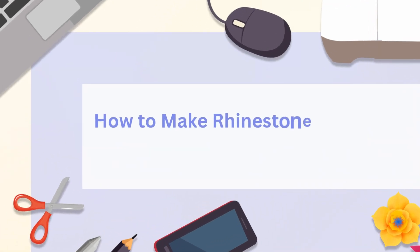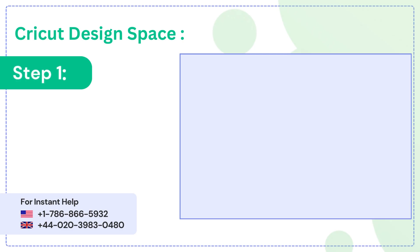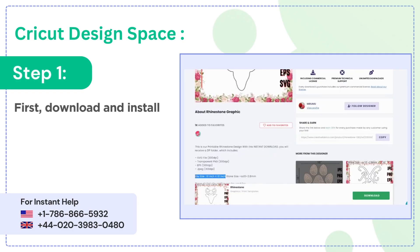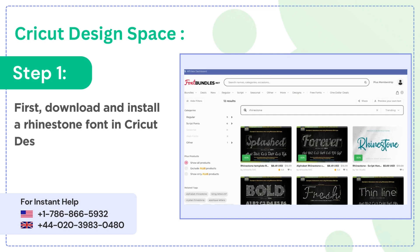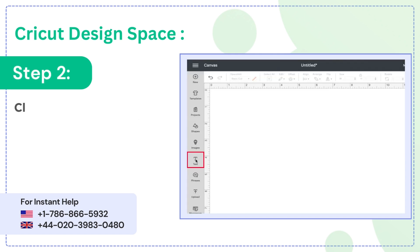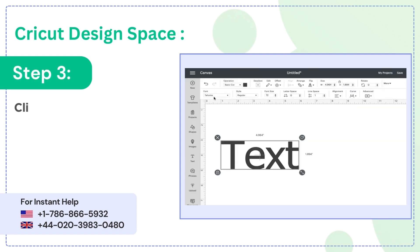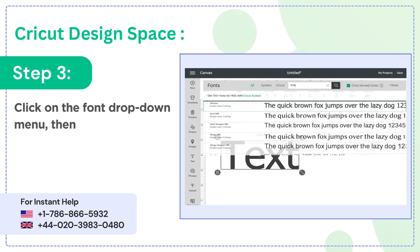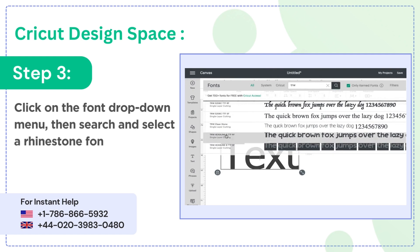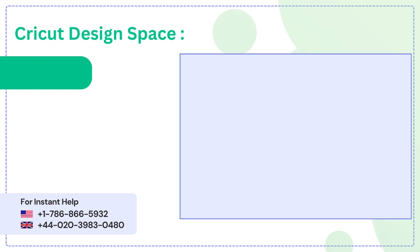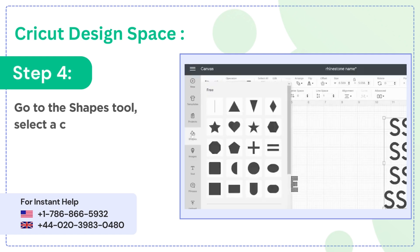How to make a rhinestone template in Cricut Design Space. Step 1: first download and install a rhinestone font in Cricut Design Space. Step 2: click on the text tool in Cricut Design Space. Step 3: click on the font drop-down menu, then search and select a rhinestone font.